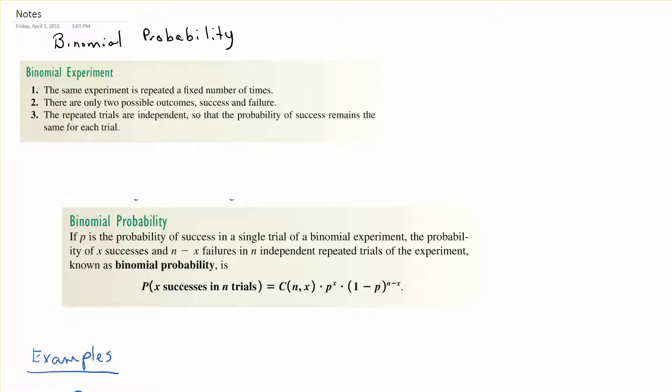This is section 8.4 on binomial probability. We need to talk about a couple of definitions or explanations and then look at the formula for binomial probability.